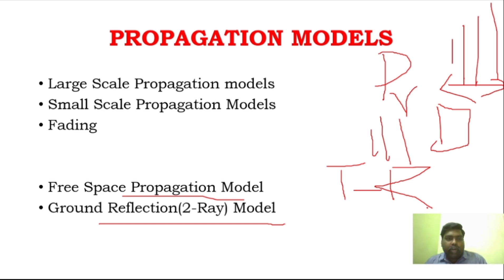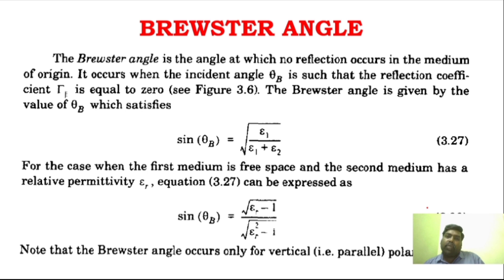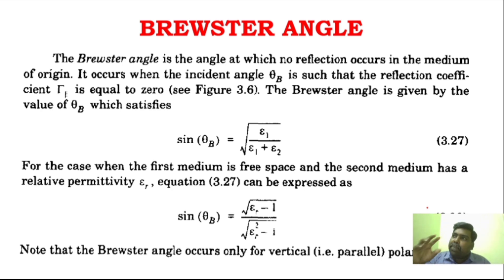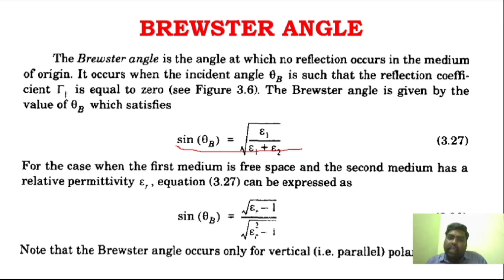Before going to these models, we have to know another important concept: the Brewster angle. What is Brewster angle? I have already explained what reflection is. If reflection is not happening in the medium of origin at a particular angle, that particular angle is called the Brewster angle. The Brewster angle is the angle at which no reflection occurs in the medium of origin. The formula for Brewster angle is given. If there are two media — one is free space and the second medium has a relative permittivity of epsilon r — the formula becomes: sine inverse of the square root of (epsilon r minus 1) divided by (epsilon r squared minus 1). This is an important two-mark question.